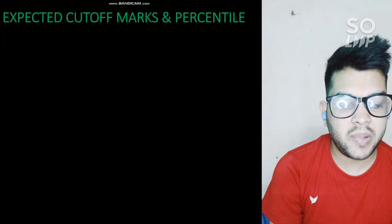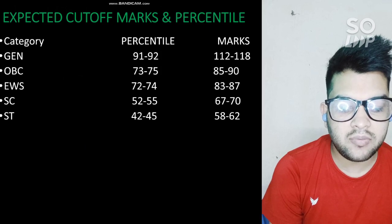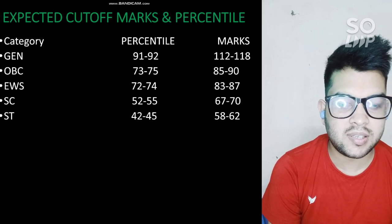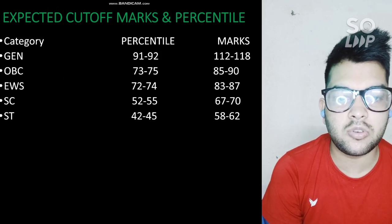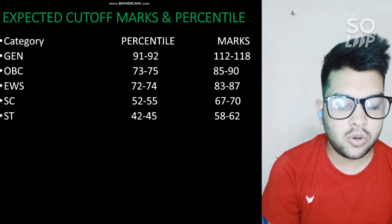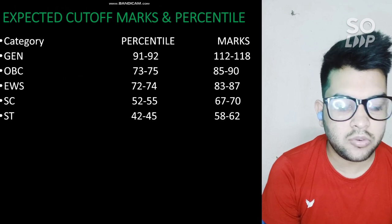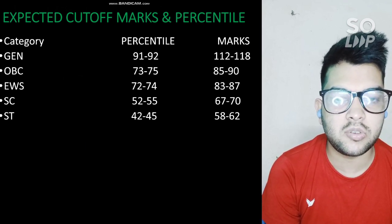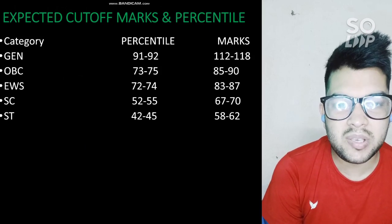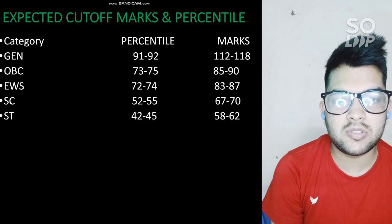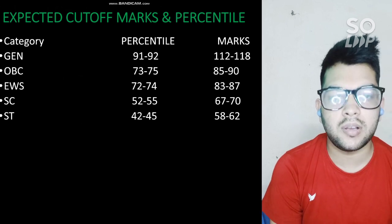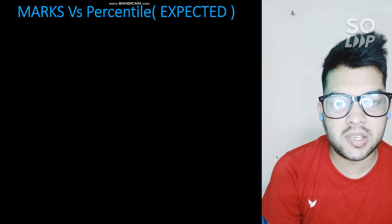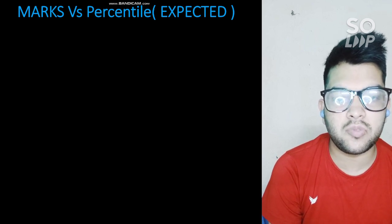For the expected cutoff marks and percentile to qualify for JEE Advanced, all details are listed on screen — you can take a screenshot. For General category, the cutoff is 91 to 92 percentile, with a marks range of 112 to 118. If you are scoring around 110 marks, you can still be safe for JEE Advanced since the paper was a little difficult. Marks versus percentile data for this shift is in this video; for the next shift I will provide a separate video.